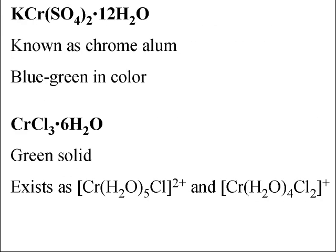There are several common examples of chromium(III) compounds. One is potassium chromium sulfate dodecahydrate, known as chrome alum, which is blue-green in solution. Another is chromium chloride hexahydrate, a green solid that dissolves to give a green solution. In the solid state, this compound actually exists as multiple isomers — a chloro and a dichloro form — and it is the dichloro that is responsible for the green color.